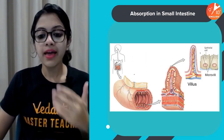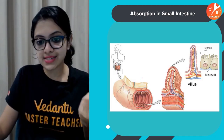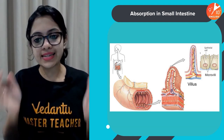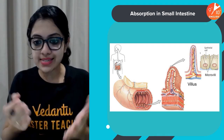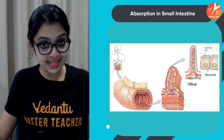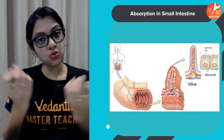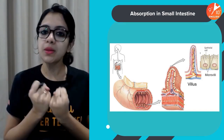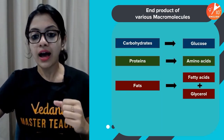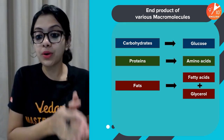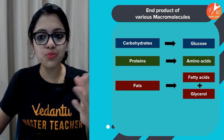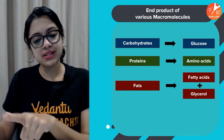The inner walls of the small intestine are made up of highly folded structures called villi and microvilli, which greatly increase the surface area for absorption. These villi are richly provided with blood capillaries that readily absorb nutrients from the small intestine into the bloodstream and transport them to all the cells of the body. The end products of digestion are: carbohydrates broken down to glucose, proteins to amino acids, and fats into fatty acids and glycerol.